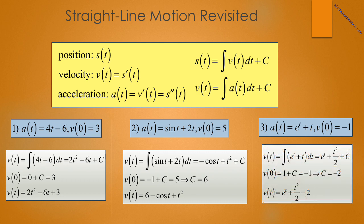In number three, we're told that a of t equals e to the t plus t and v of 0 is equal to negative one. So the velocity is the integral of e to the t plus t dt, which we know is e to the t plus t squared over 2 plus c. V of 0 is 1 plus c, and we know that is equal to negative one, therefore c is equal to negative two. Therefore, our velocity function is e to the t plus t squared over 2 minus 2.